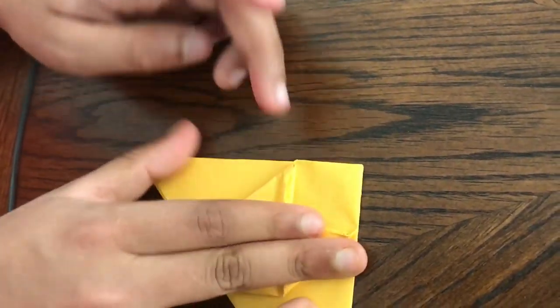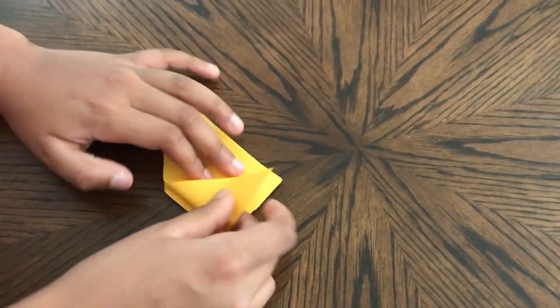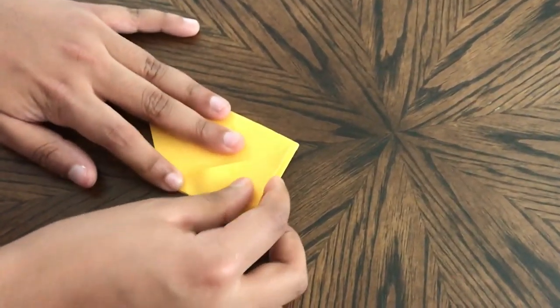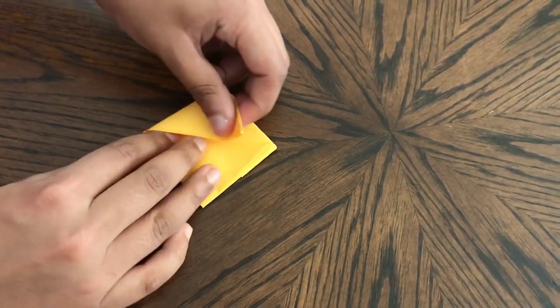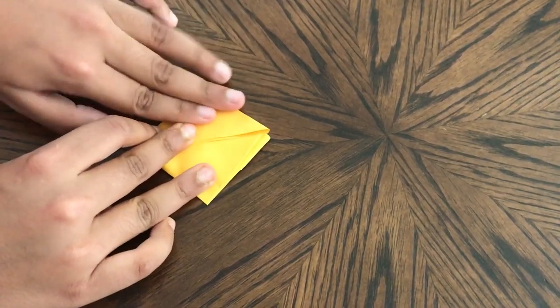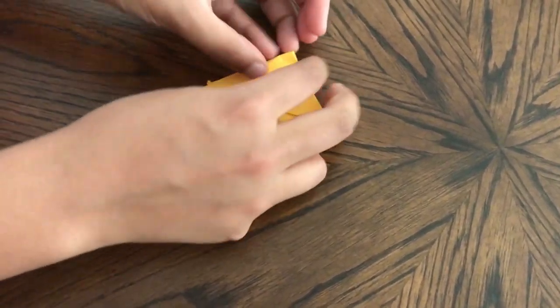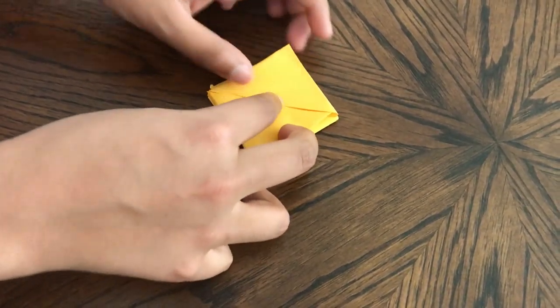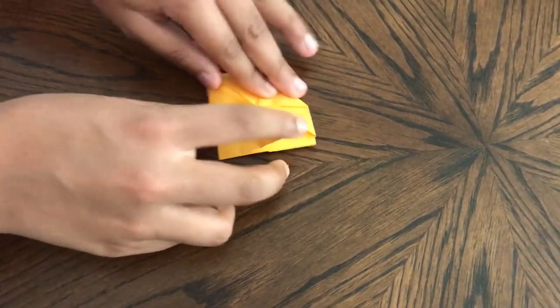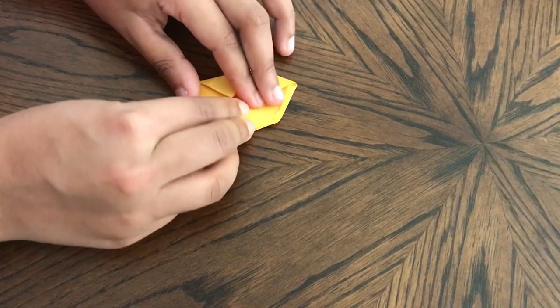All right, so now turn it around and repeat the steps you just did. So again, fold these two up. Now you're going to fold that point to the center. Do the same on the other side.